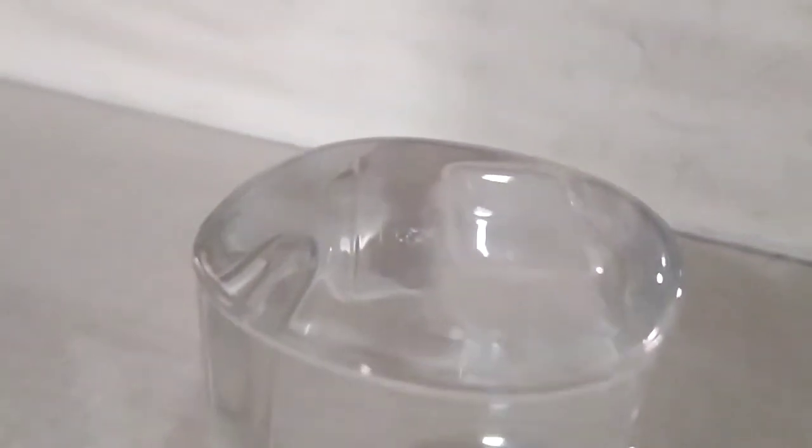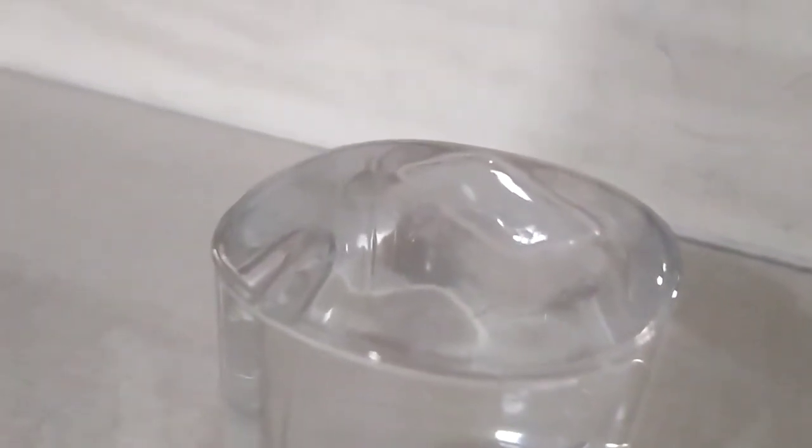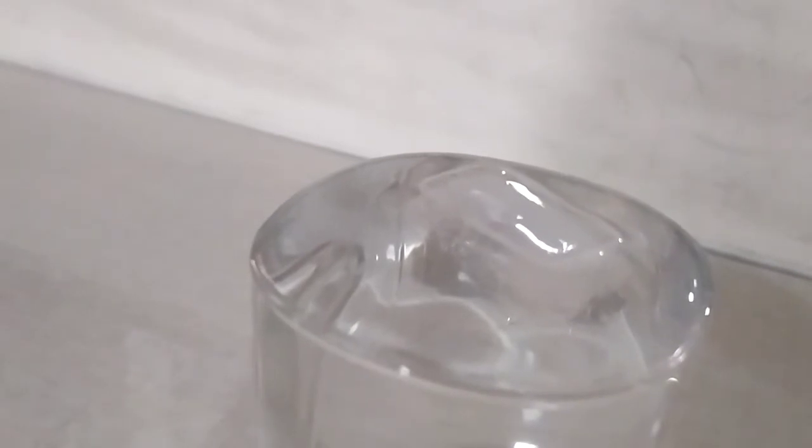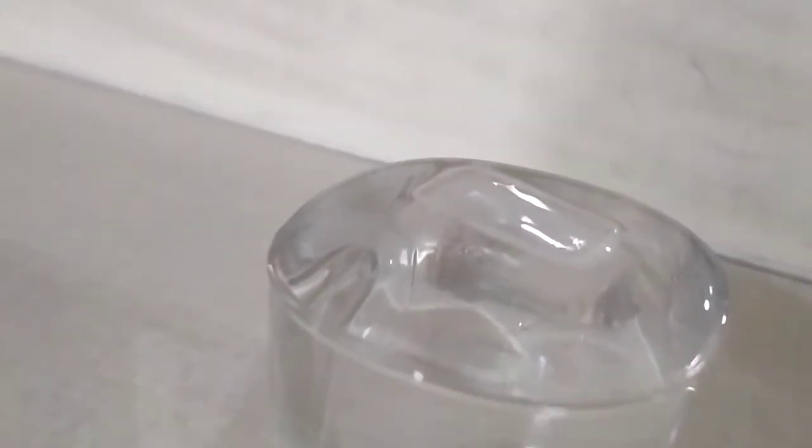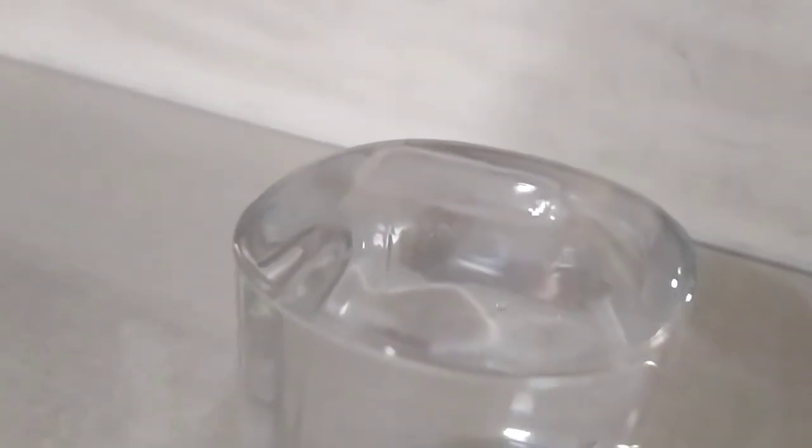When water turns to ice, at 0 degrees Celsius, density of water is quite low. Lowest density than the water, means lower density of ice than liquid, which is able to float.